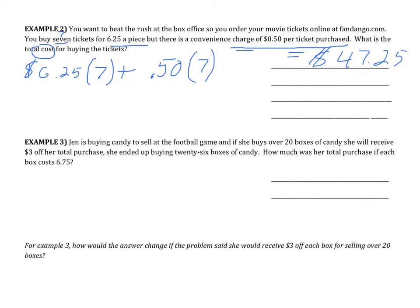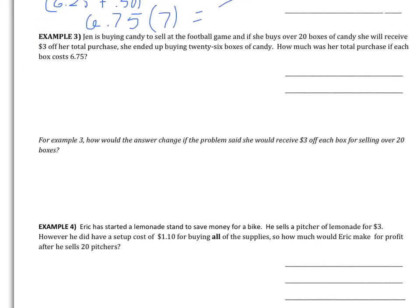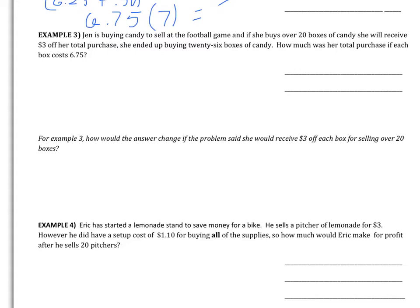Now, there's another way of doing this. You could have said, well, you're not actually paying $6.25 anymore per ticket. You're actually paying $6.25 plus that $0.50 per ticket. So you could have simply said, and again, this is notes, so let's get this down. $6.25 plus the $0.50. So you're actually paying $6.75 per ticket, and we bought seven tickets, okay? And you would get the same thing, okay? So get both of these methods down. I apologize for my handwriting. I don't have my stylus pen, so I'm using my finger. Alright, go on to example three.